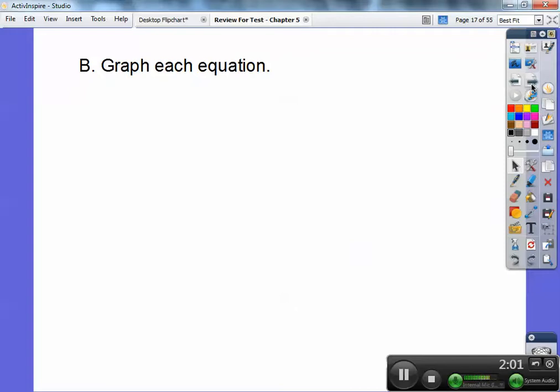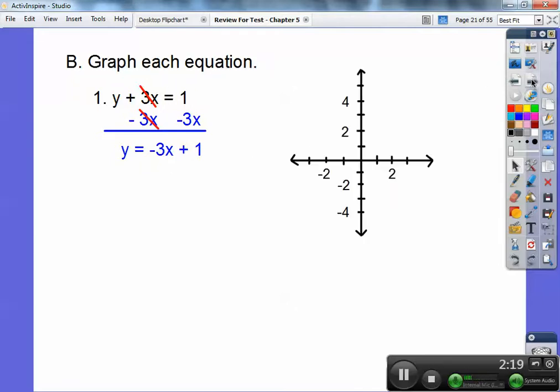Alright, so graph each equation. Here we go. y plus 3x equals 1. I think it's easiest to just subtract 3x on this one on both sides and get it in y equals mx plus b form. This is my slope, negative 3. This is my y-intercept where it crosses the y-axis. So I'm going to go ahead and make a graph right there. And I'm going to graph this point first. Always graph when you have it in y equals mx plus b form. Go and graph your y-intercept at plus 1 right there.